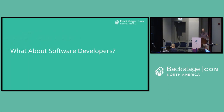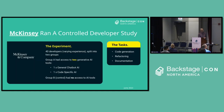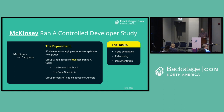But these were knowledge workers — consultants working for BCG. What about software developers? Are they any different? There's another study: McKinsey ran a controlled study. Smaller group size — 40 developers took part with varying experience, split into two groups. One group had access to two generative AI tools: one was a general-purpose chatbot like ChatGPT, and the second was something more code-specific, pre-trained on code, something like a co-pilot.